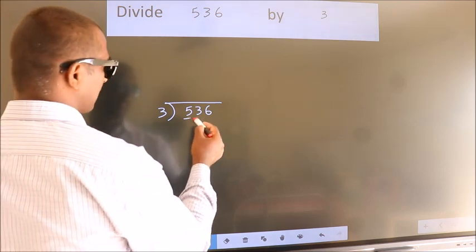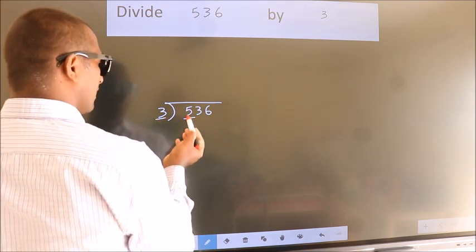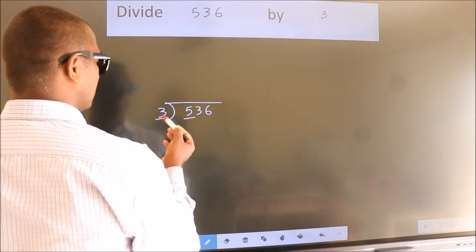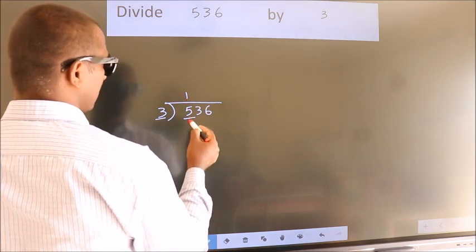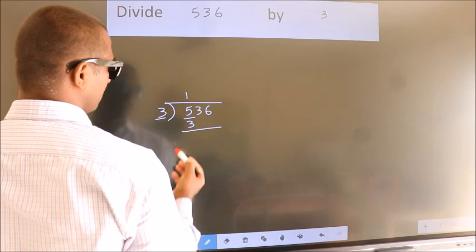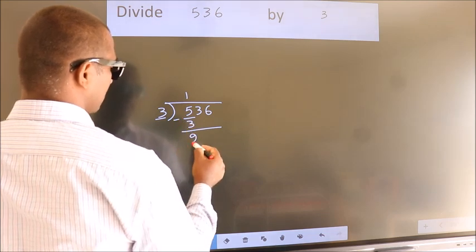Next, here we have 5, here 3. A number close to 5 in the 3 table is 3 1s 3. Now we should subtract. We get 2.